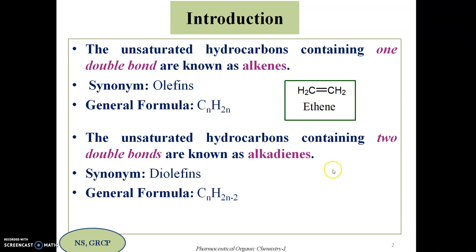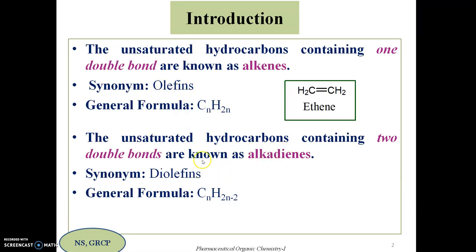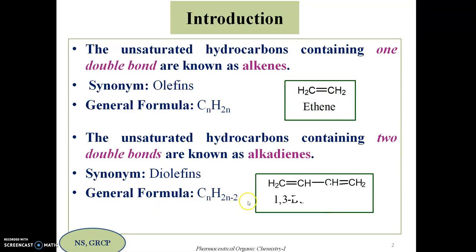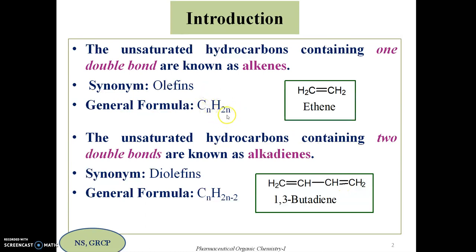In organic chemistry there are also compounds which have two double bonds — unsaturated hydrocarbons containing two double bonds. These are known as alkadiens. Since alkadiens have two double bonds, they are also known as diolefins. Their general formula is CnH2n−2. One more double bond means the removal of two more hydrogens compared to alkenes.